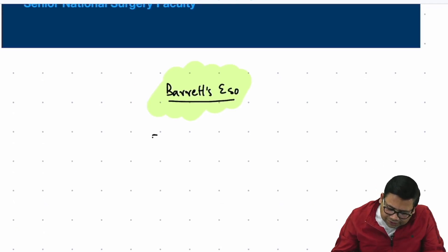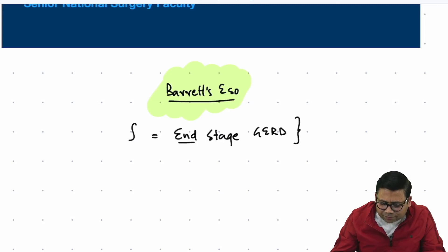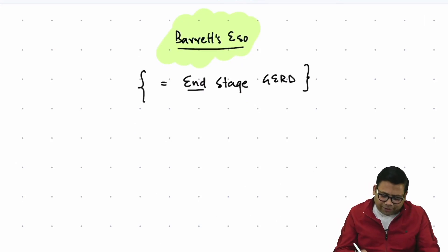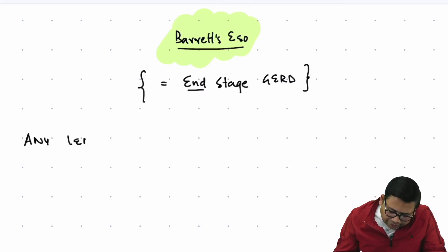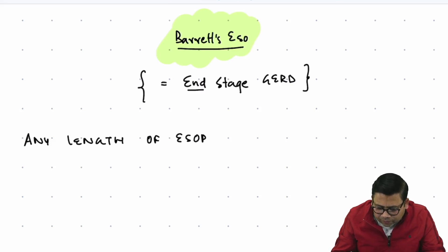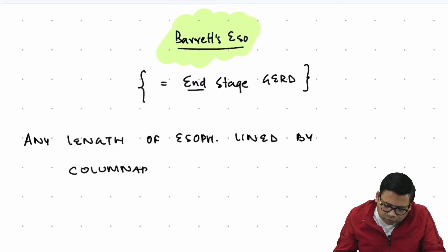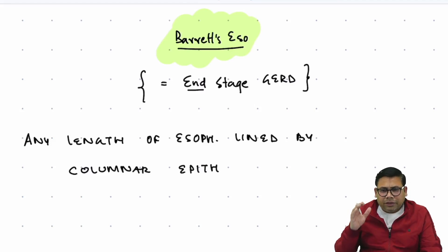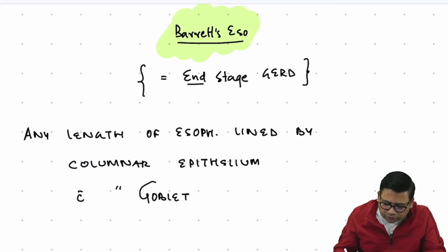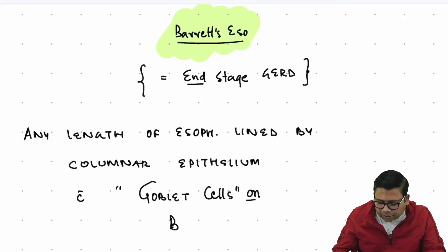Barrett's esophagus is essentially end-stage GERD. The classical definition: it is defined as any length of esophagus — it is length-independent — lined by columnar epithelium. Normally the esophagus has squamous epithelium. So Barrett's is any length of esophagus lined by columnar epithelium with goblet cells on biopsy. The presence of goblet cells is what makes it very special.